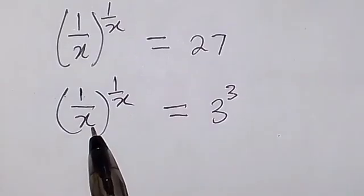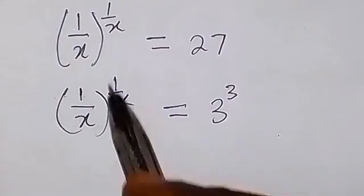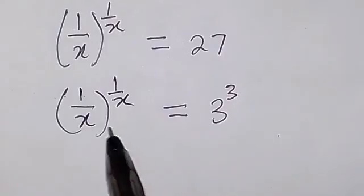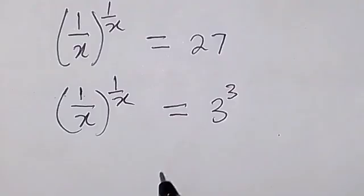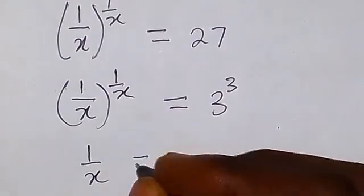And we can see from here that we have a number raised to the same number and also the number raised to the same number here. So clearly from here now we can see that 1 over x equals to 3.